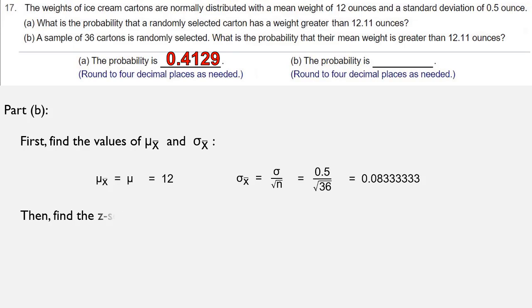Now we find our z-score. To find the z-score, it's z equals x-bar minus mu of x-bar over sigma of x-bar. We insert the values where they go. We get 12.11 minus 12 over 0.083333333. When we simplify, we get 0.1 divided by that decimal. And when we divide and round to two decimal places, we get a z-score of 1.32.